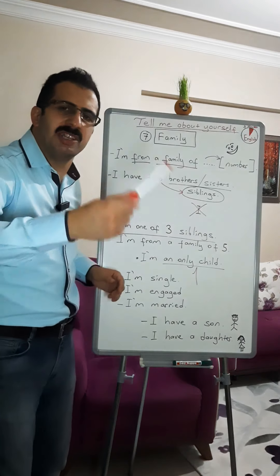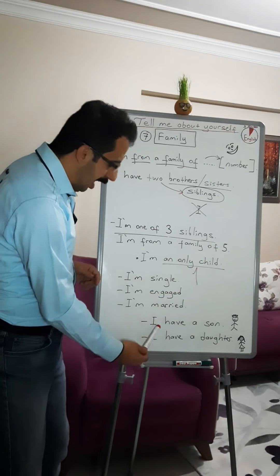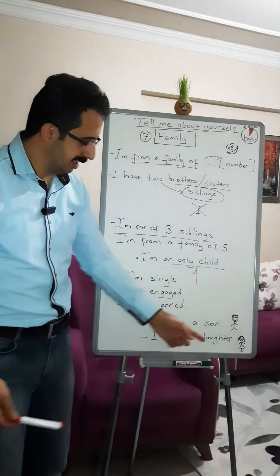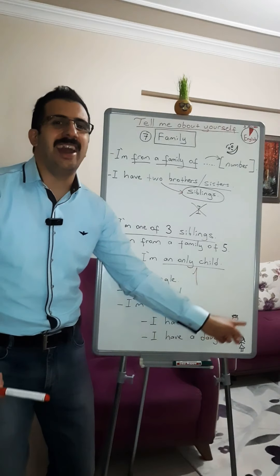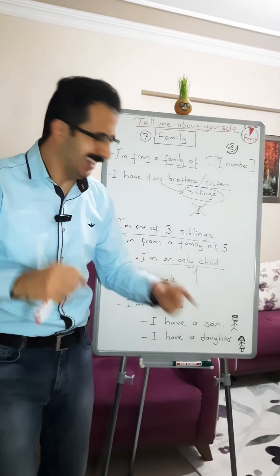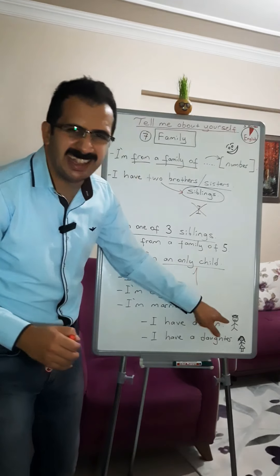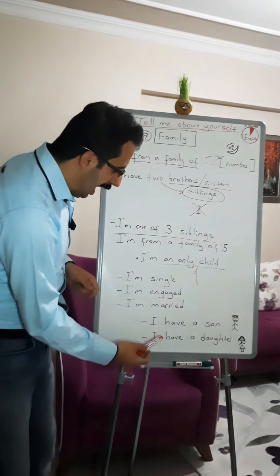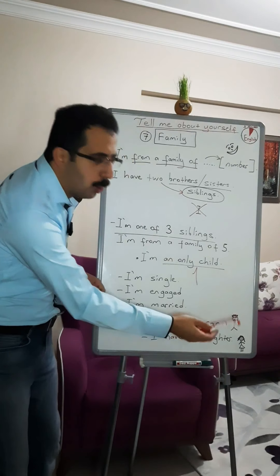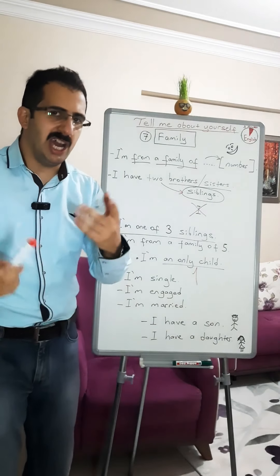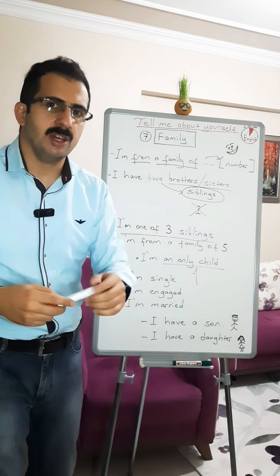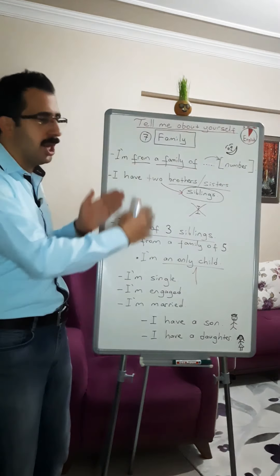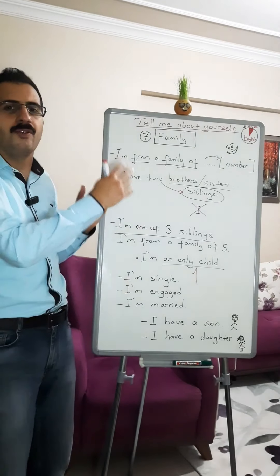You can also add whether you have children. You can say: 'I have a son' or 'I have a daughter.' This is about your family.